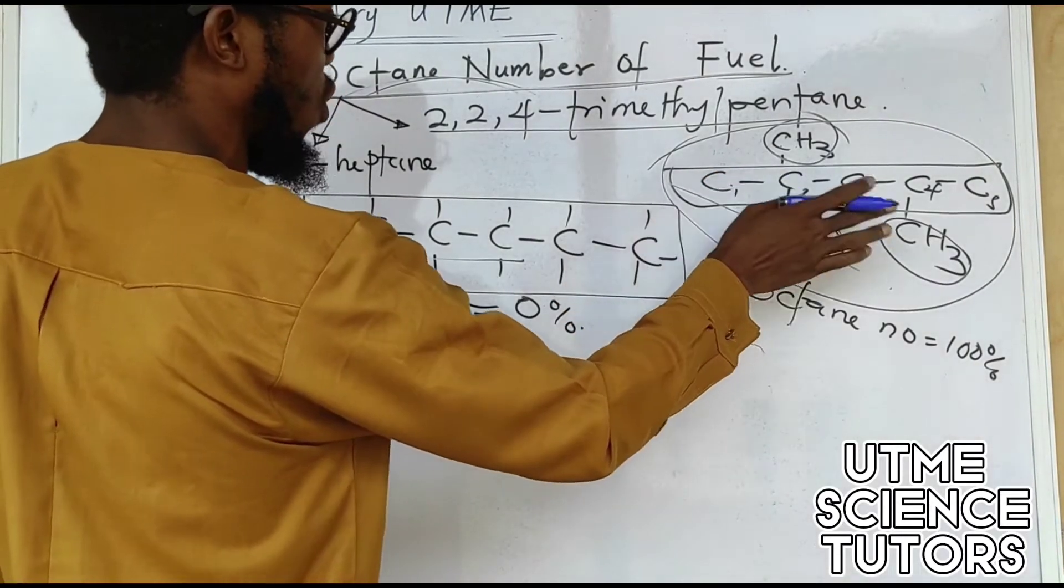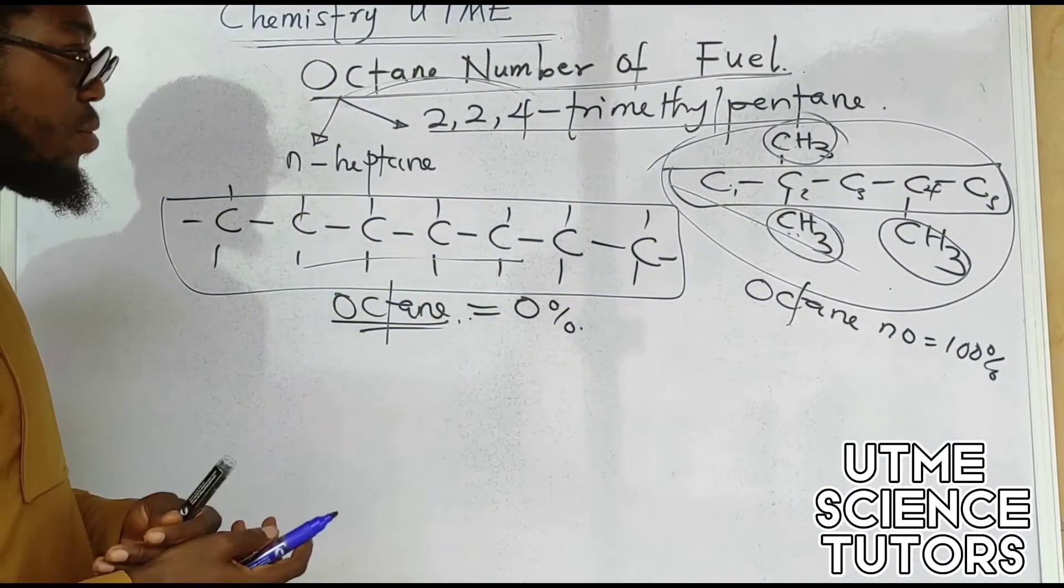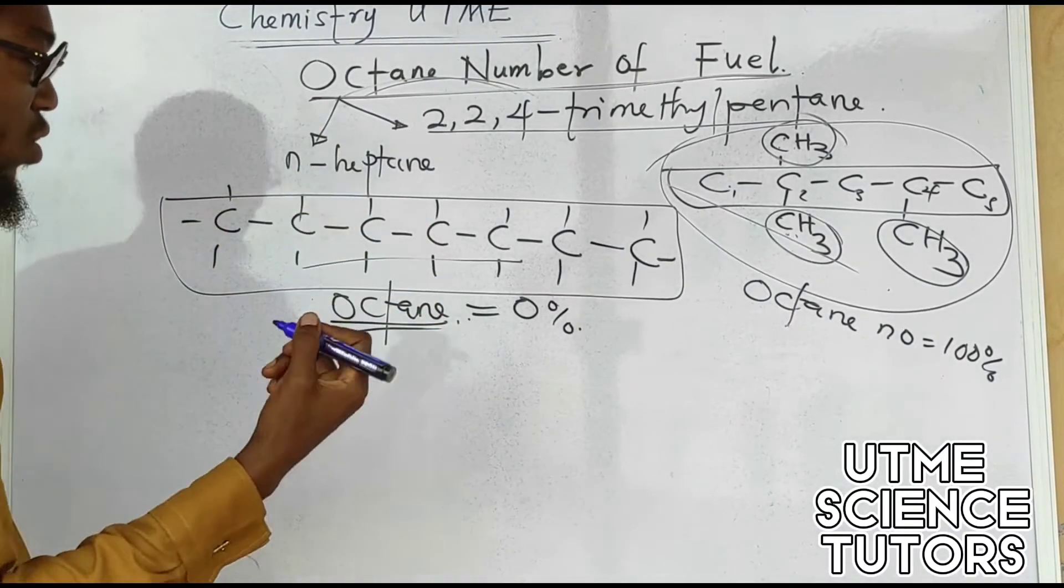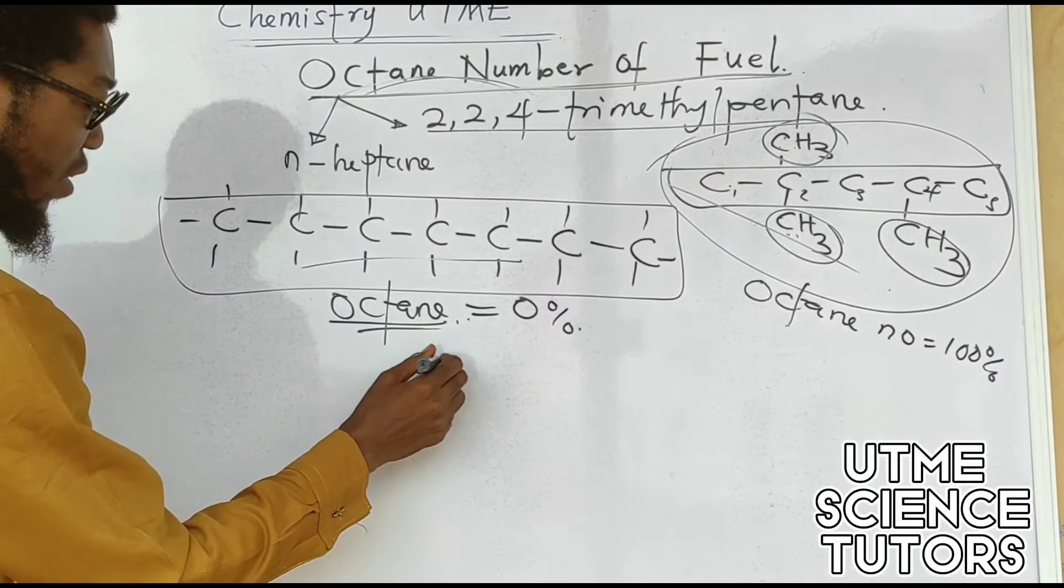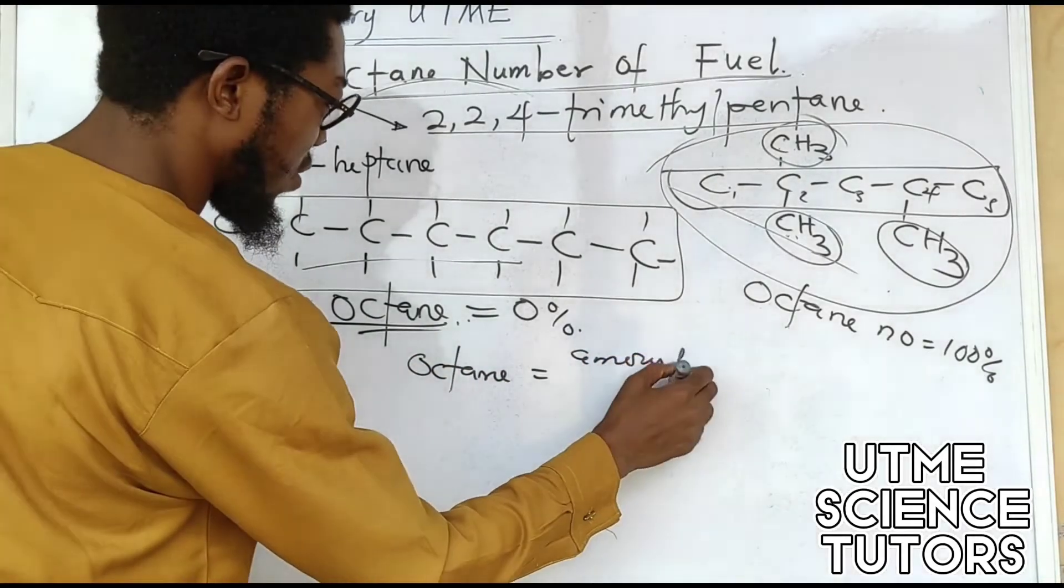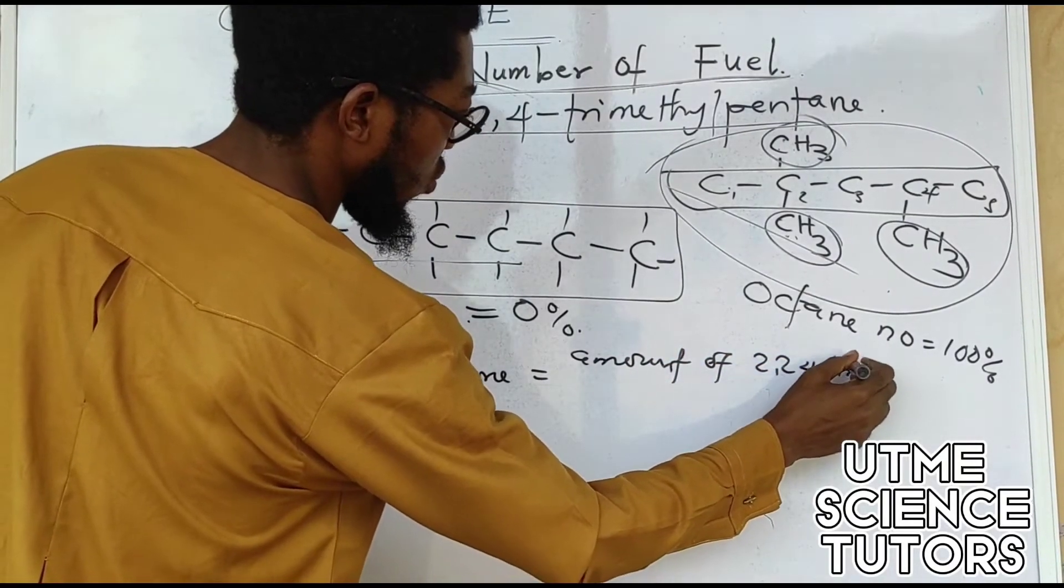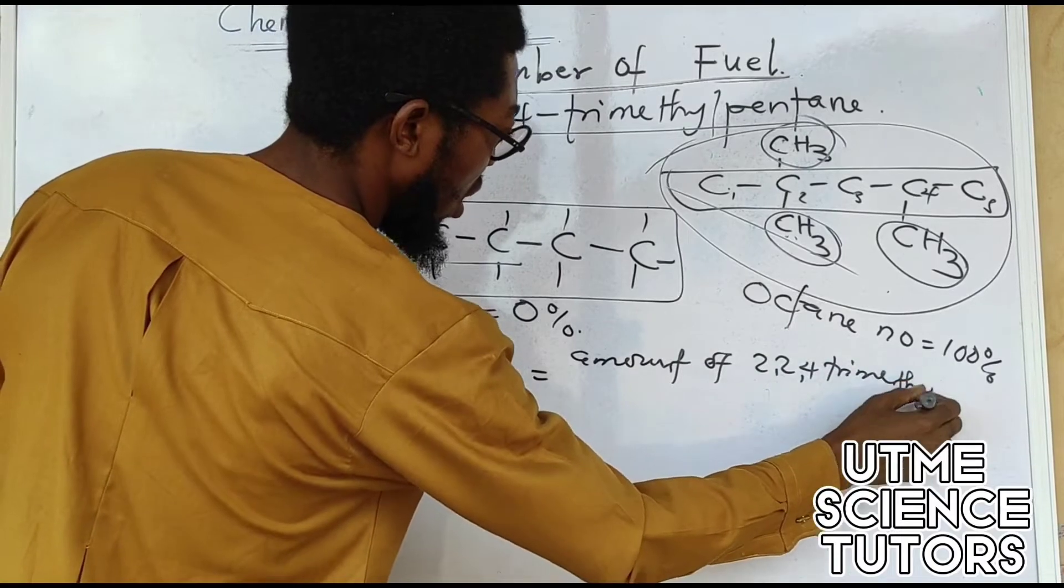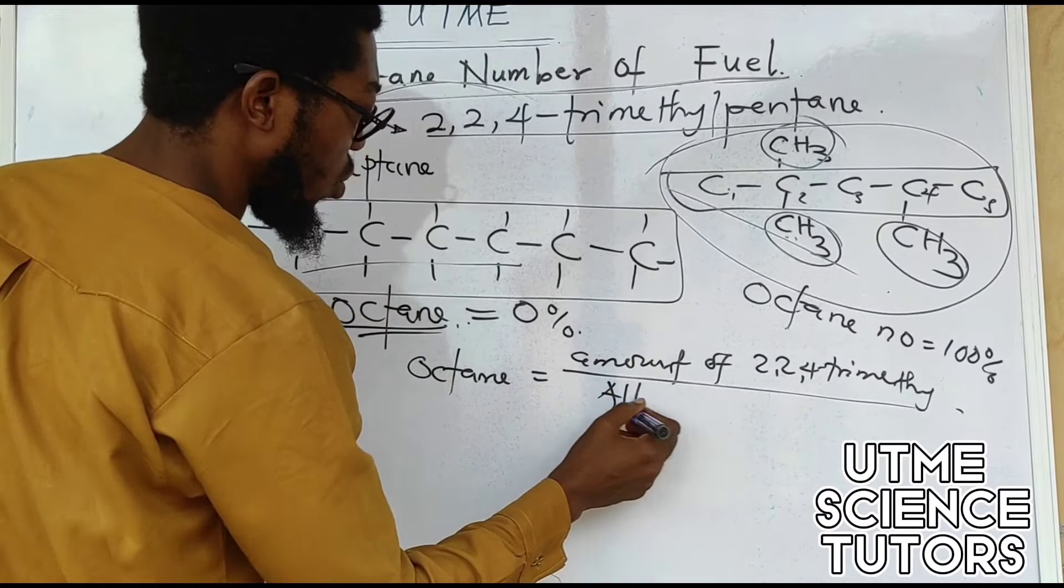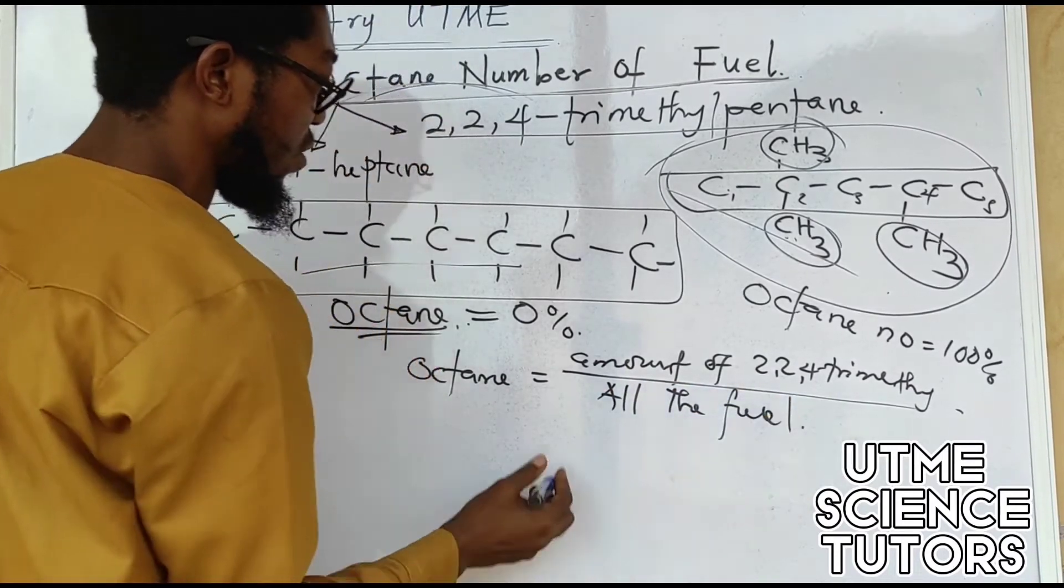In a given mixture, the way to know the octane number is: we're going to say octane number is equals to the amount of 2,2,4-trimethylpentane divided by all the petrol, all the fuel. And all the fuel means the sum of the n-heptane and the 2,2,4-trimethylpentane.